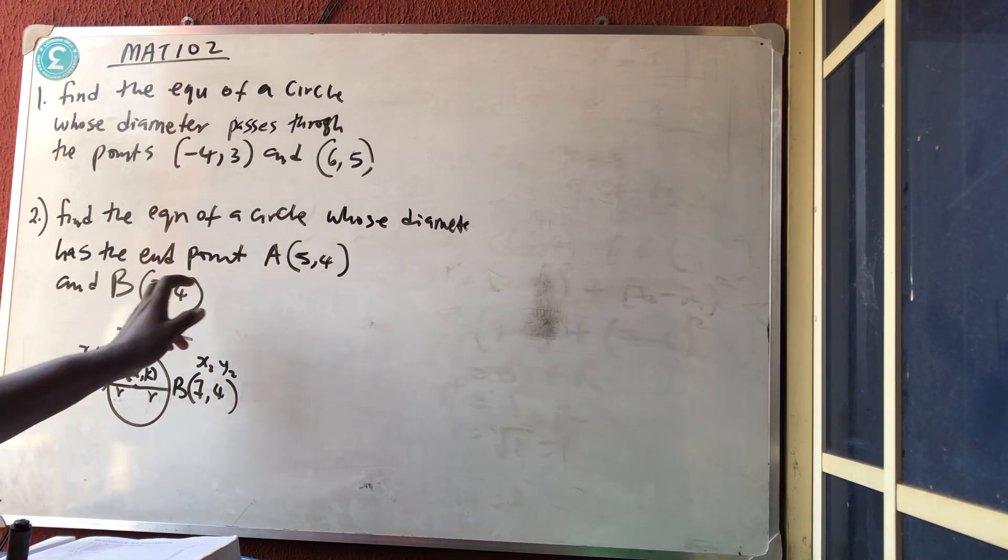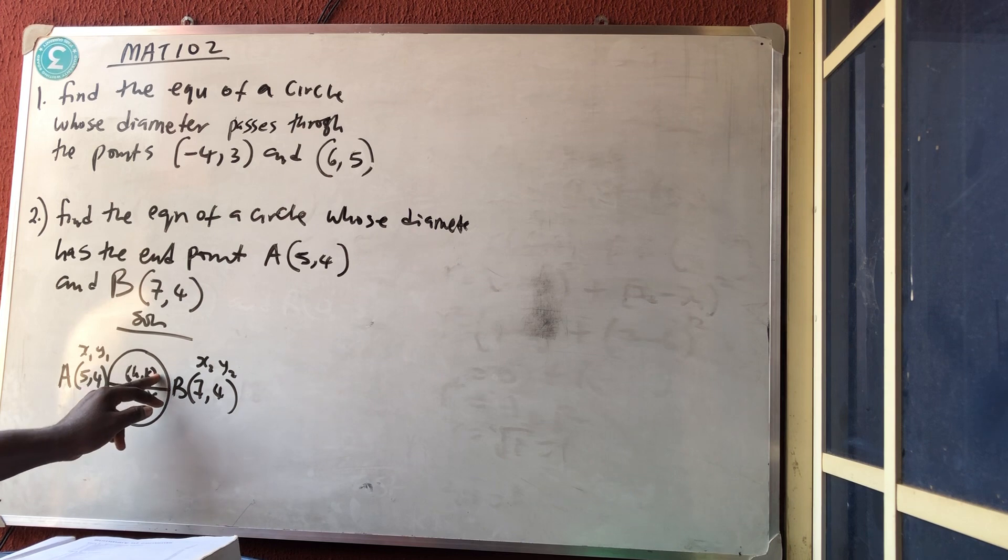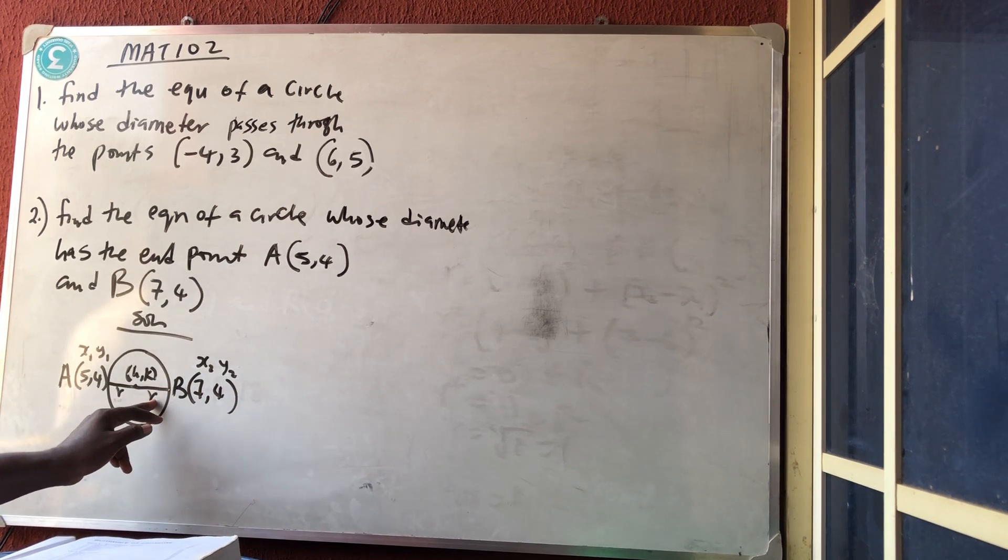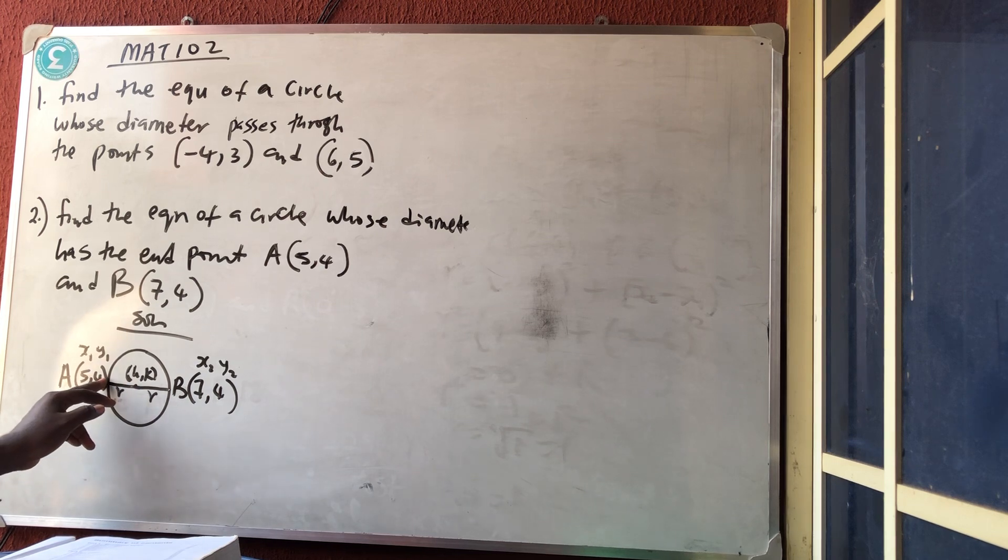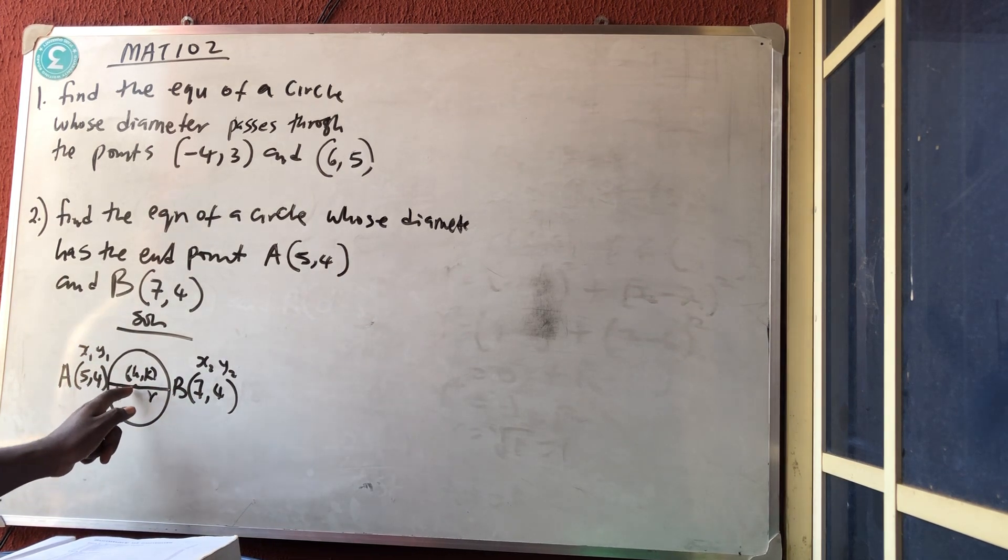If you look at this, this is a circle. The center of the circle we always call it h comma k. The distance from the center to any part of the circumference is the radius. The diameter is any line that starts from one part of the circumference to the other part of the circumference passing through the center.